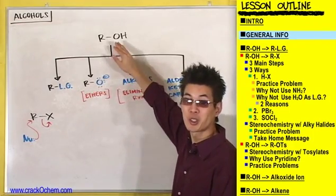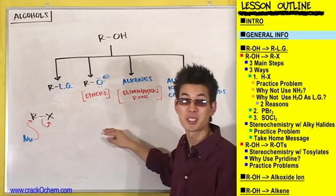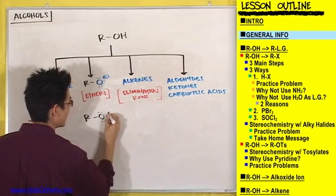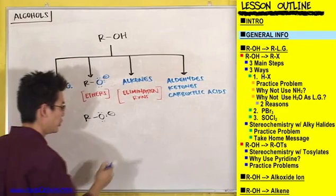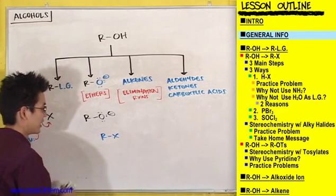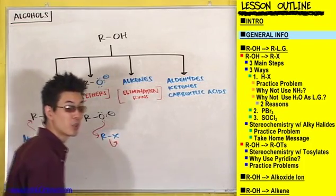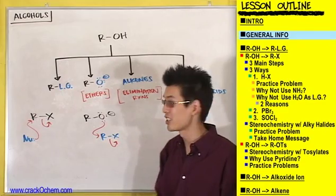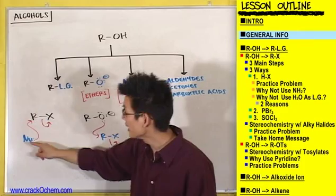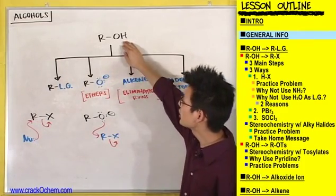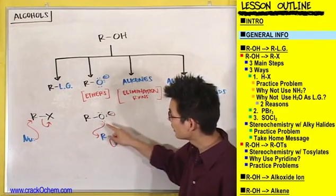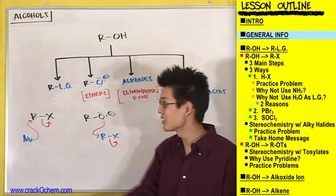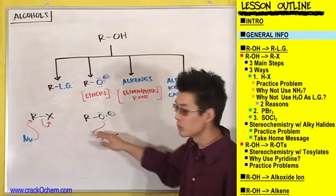In this first example, we turn an alcohol into an electrophile so we can participate in a nucleophilic substitution reaction. In this second example, we're going to turn an alcohol into a nucleophile so it could also participate in a nucleophilic substitution reaction. Turn an alcohol into an RO⁻ — that's a great nucleophile with a negative charge. So if you throw this in with something like an alkyl halide, it's going to do a great nucleophilic substitution reaction. So for these first two examples, we turn the alcohol into the electrophile in one case, and the nucleophile in the other.